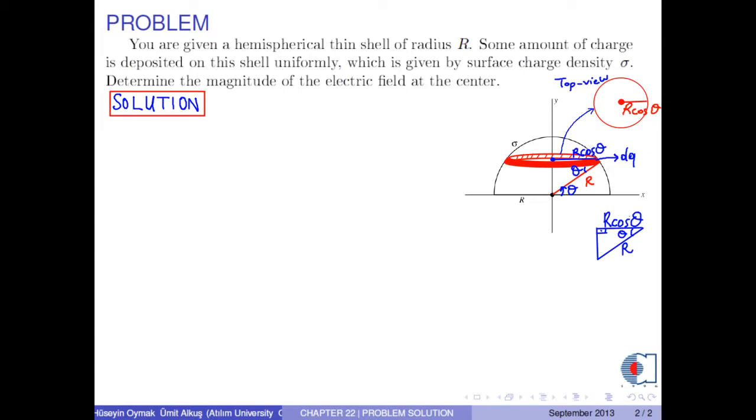Now, if we assume that the charge of the hemisphere is positive, then the electric field due to this infinitesimal thin shell at the origin lies along the negative y-axis because of the symmetry.